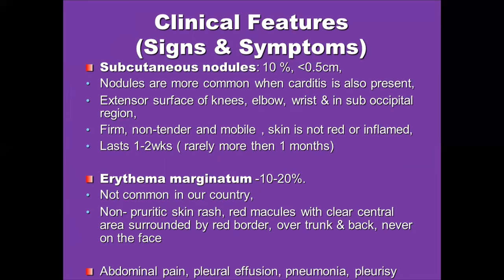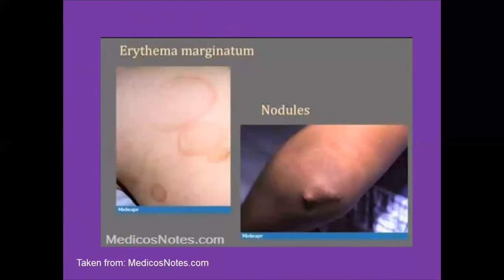Erythema marginatum is the typical rash of acute rheumatic fever, present in 10 to 20% of patients. However, it is not commonly seen in South Asian countries due to skin tone. It is a non-pruritic skin rash presenting with red macules with a clear central area surrounded by a red border, usually over the trunk and back, and almost never on the face. Other non-specific symptoms include abdominal pain, pleural effusion, and pneumonia.